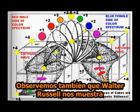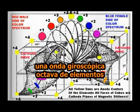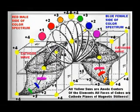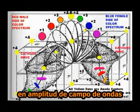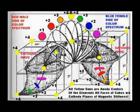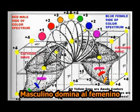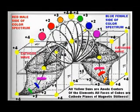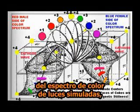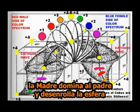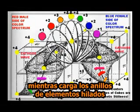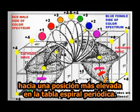Walter Russell is showing us the gyroscopic octave wave of the elements as they rise from the zero cathode planes of the still inert gases to collide at maximum compression at wave field amplitudes, which are labeled plus four, zero, plus four. On the red male side of the color spectrum, the male dominates the female in its electrical charging condition to create a sphere, while on the blue female side, the mother dominates the father and unwinds the sphere back into the inert gases of the next octave, while charging the spinning rings of elements to a higher position in the spiral periodical table.